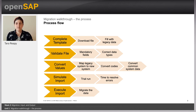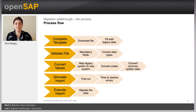The migration process considers data which is of operational importance — master data such as companies, customers, suppliers, products — and also transactional data such as open payables items, outgoing checks and so on. We need to ensure that after the go-live date, everything continues as normal in the new system with all the legacy data safely set up.